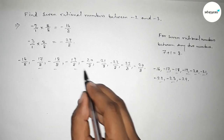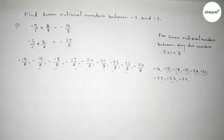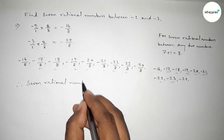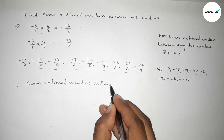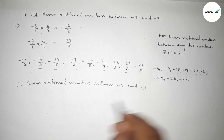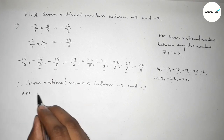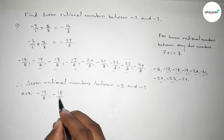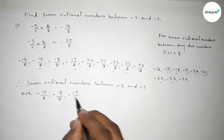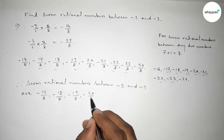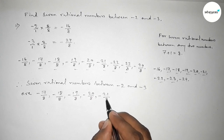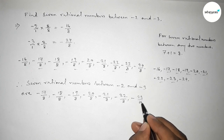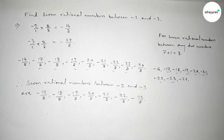The required 7 rational numbers between minus 2 and minus 3 are: minus 17 over 8, minus 18 over 8, minus 19 over 8, and so on up to minus 23 over 8.